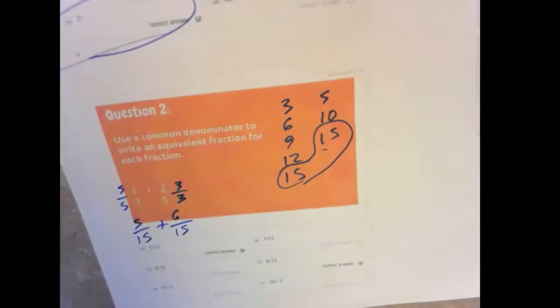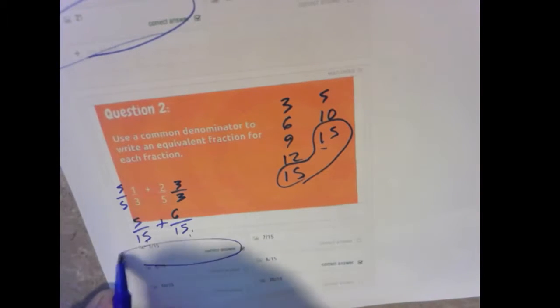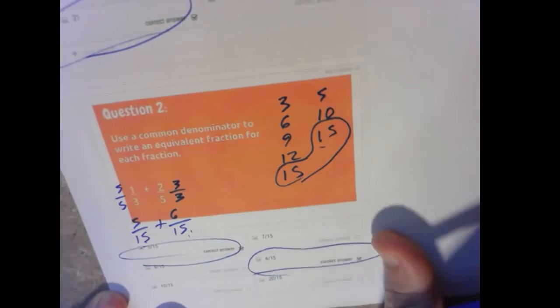Now be careful, it didn't ask us to solve this fraction. It just wanted us to find the equivalent fraction in which case there is a common denominator. So 5 over 15 and 6 over 15 are our answers.